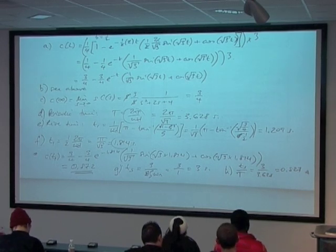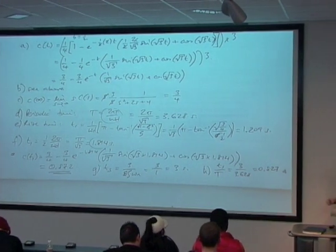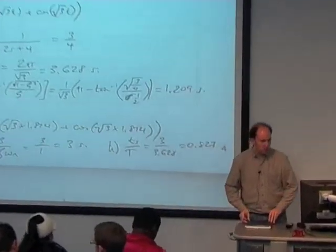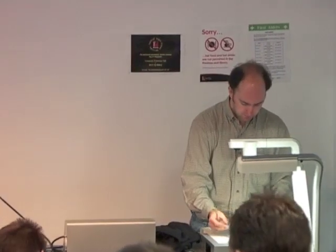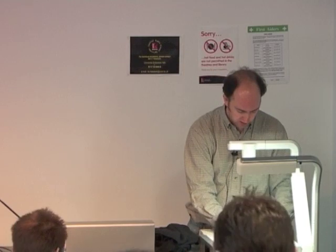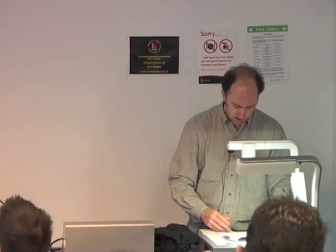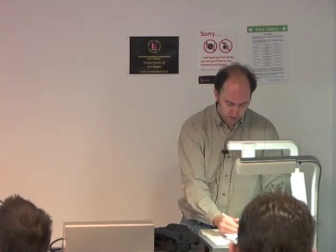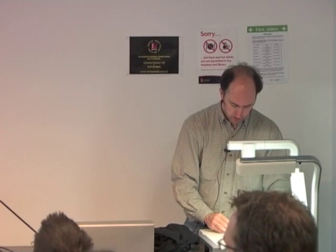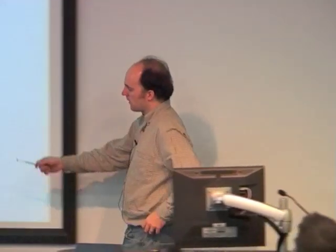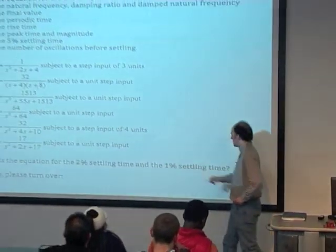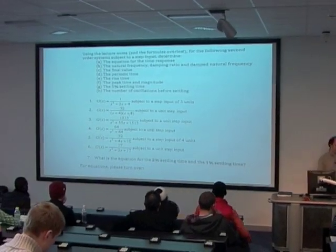The rest of the tutorial sheet looks just like that — there's a whole bunch of different transfer functions to work out those various terms for. Right at the end there's a little exercise asking for the equation for the 2% settling time and the 1% settling time.